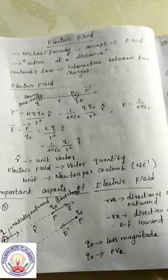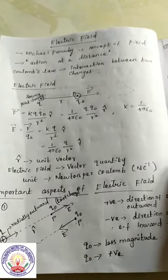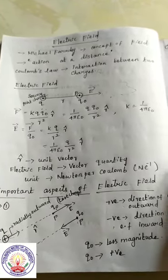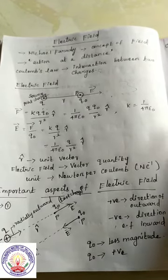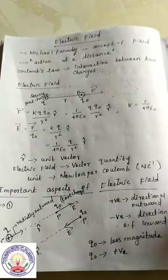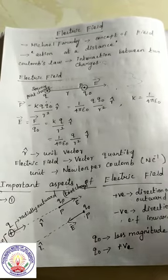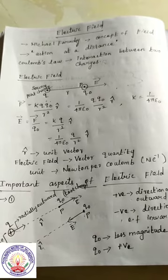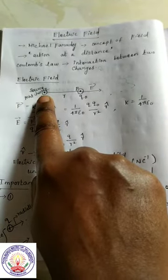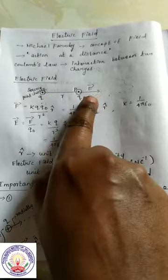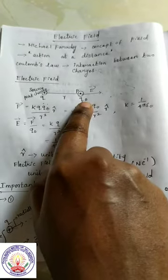The electric field was introduced by Michael Faraday. So this is the introduction part. What is electric field? We have to apply electric field. The two charges: first charge Q1, second charge Q2. The same concept we apply to electric field. Electric field also we have to consider two charges. Our first charge is source charge and second charge is test charge. One first charge is Q and second charge is Q0. Q is the source point charge and Q0 is the test charge.